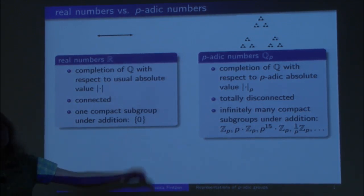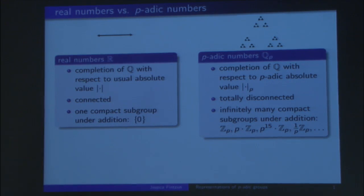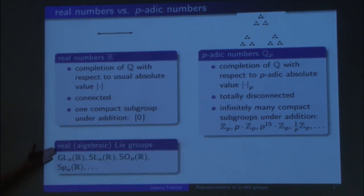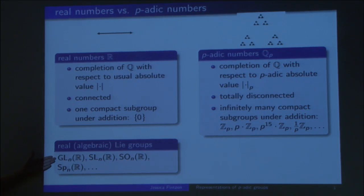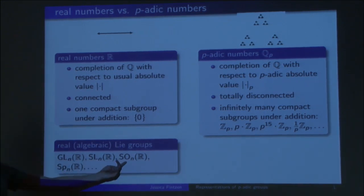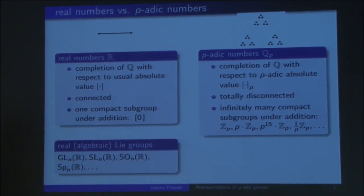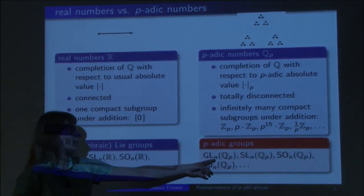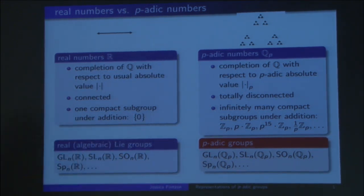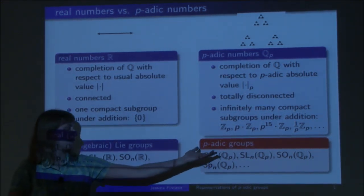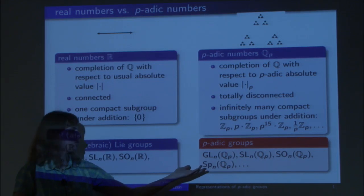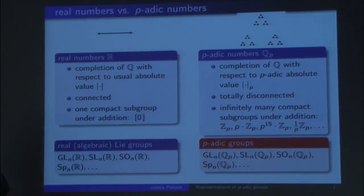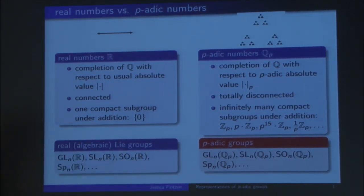So those are the p-adic numbers. What are now the p-adic groups? For the real numbers, you might know the Lie groups like GL_N over R, SL_N over R, or those that preserve some inner product or symplectic form. We can do the same thing but instead of using R, we use Q_P. That's what I call a p-adic group: GL_N, SL_N over Q_P, those that preserve some inner product or symplectic form, and there are also some exceptional ones.